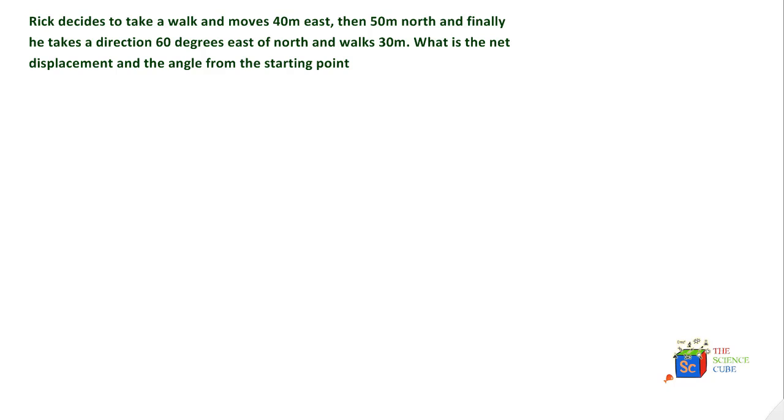Let's say Rick starts walking from the origin of a coordinate axis. Here is a coordinate axis and Rick starts moving from the origin. He walks 40 meters first towards east.